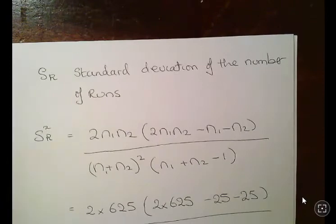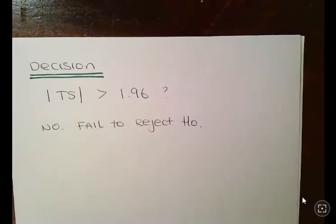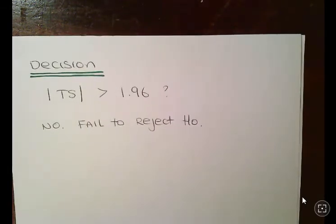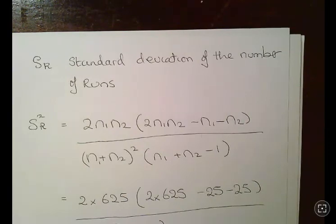So is the absolute value of that greater than 1.96? No it's not. We fail to reject the null hypothesis. The null hypothesis is that the order is purely random, the alternative hypothesis is that it is not random. And in this situation we fail to reject the null hypothesis, so it's safe to know there's no reason not to assume randomness essentially. So that is the runs test and we leave it there.